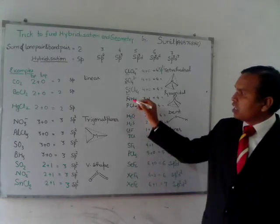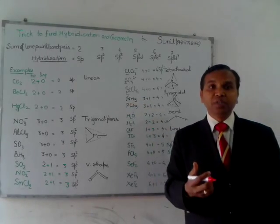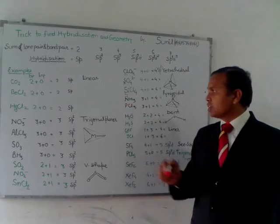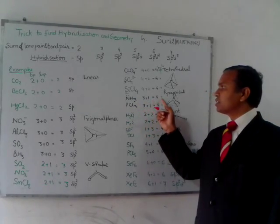Here NH3 and PCl3 - these are elements of the 15th group which can have one lone pair of electron and these three are the bond pair of electrons, so the sum is 3 plus 1, that means 4.